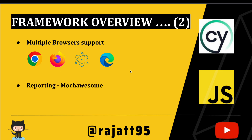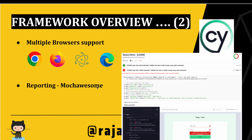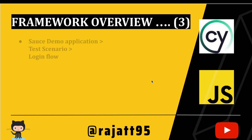Once we can execute our test cases, we'll look at a reporter called the Cypress Mocha Awesome Reporter. We'll use this for reporting purposes — we'll be able to see all passed, failed, and skipped test cases, and apply filters. For example, if you ran 100 test cases and 20 failed, you can click one icon to see only those 20. We'll also attach screenshots and videos of failed test executions directly to the report.